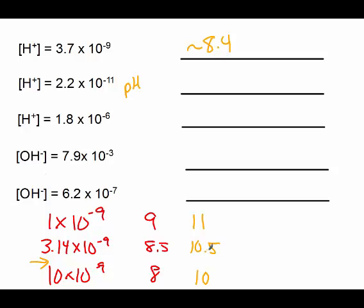So, it should be between 11 and 10. 2.2 is up here in this section, so around 10.75. Next one should be between 6 and 5, and 1.8 is in this range again, so maybe 5.8.